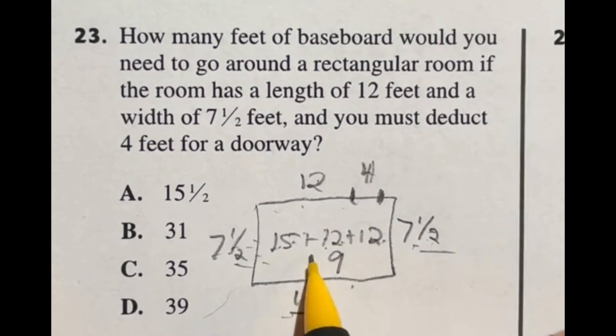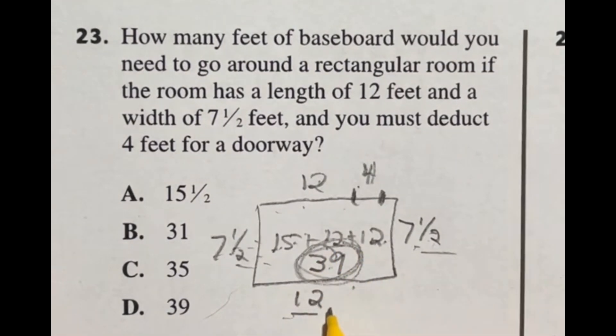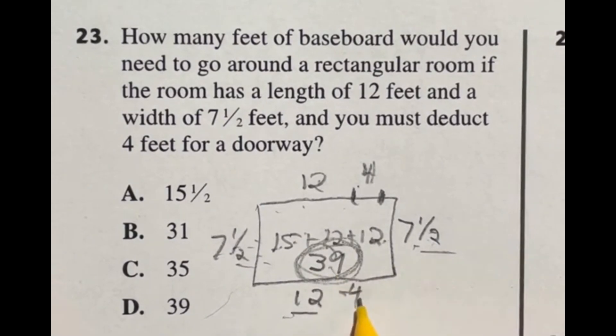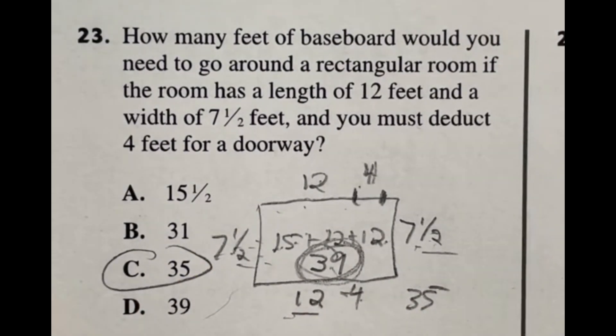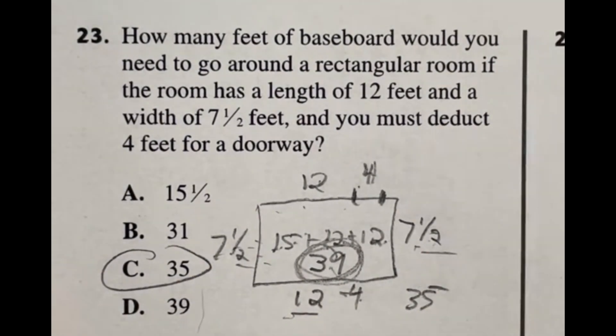Don't forget we got to subtract off that 4. So although we got a perimeter of 39, we're going to subtract off the 4 and 39 minus 4 is just going to give us 35. That means our answer is C.